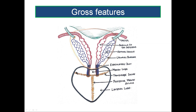You can see a transverse sulcus dividing the posterior surface into an upper smaller part and a lower larger part. This transverse posterior sulcus will have, on either side of the midline, the ejaculatory ducts piercing the prostate and entering.